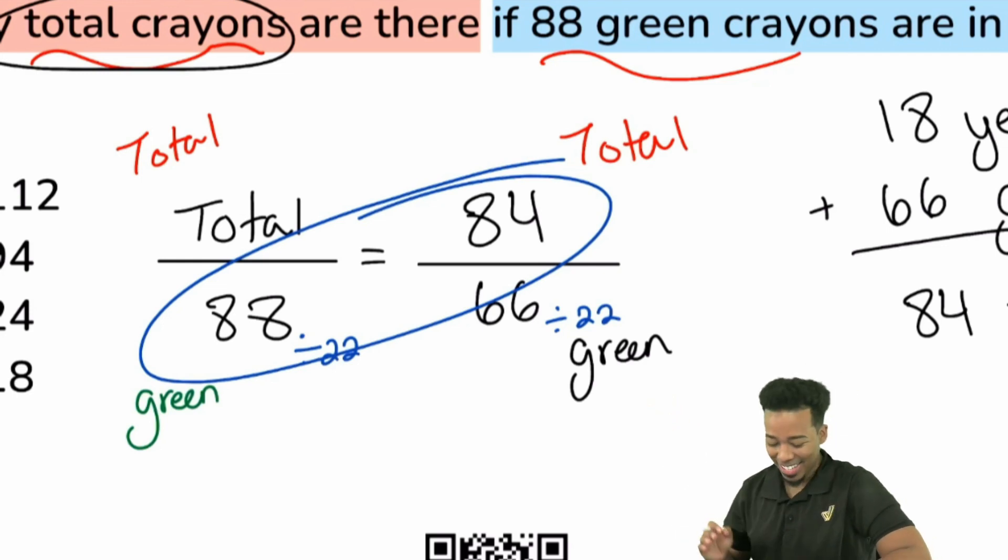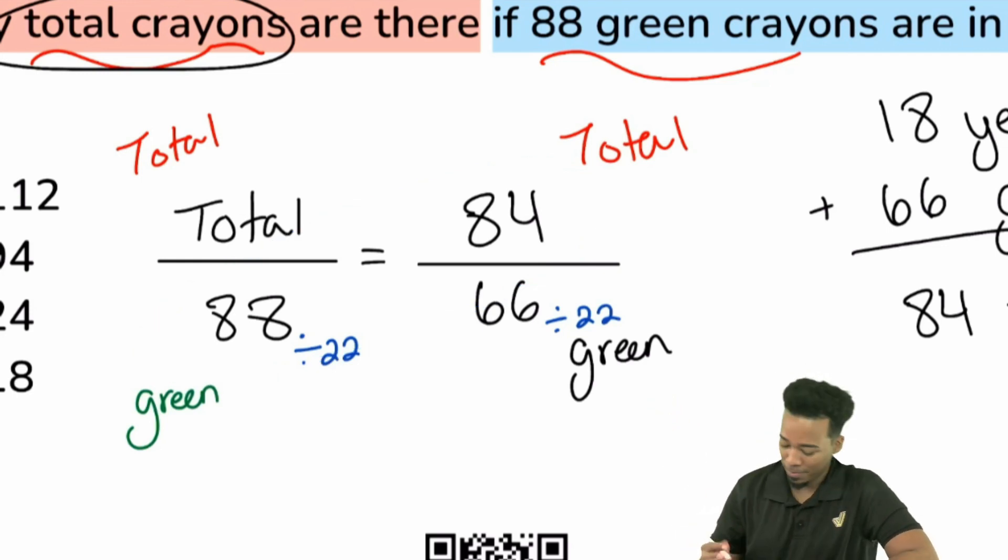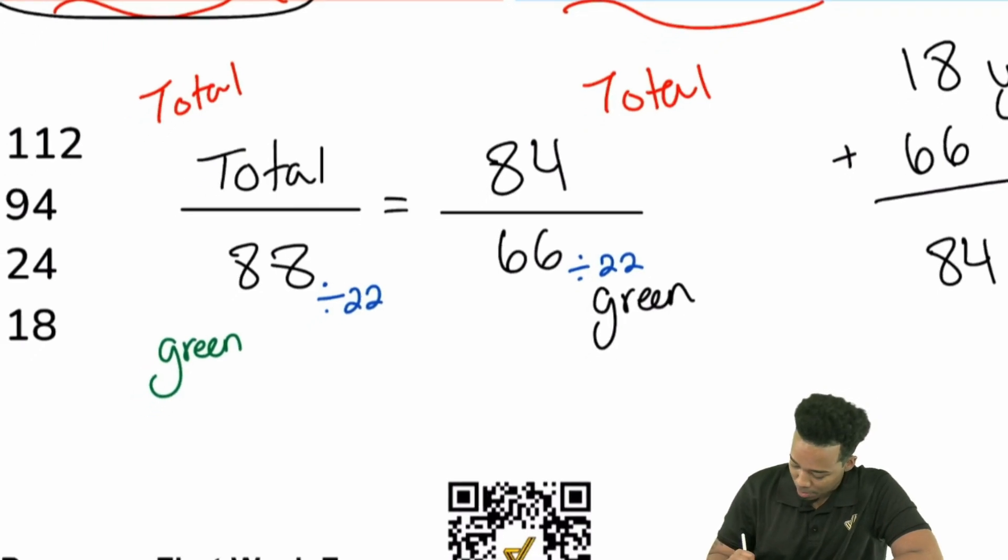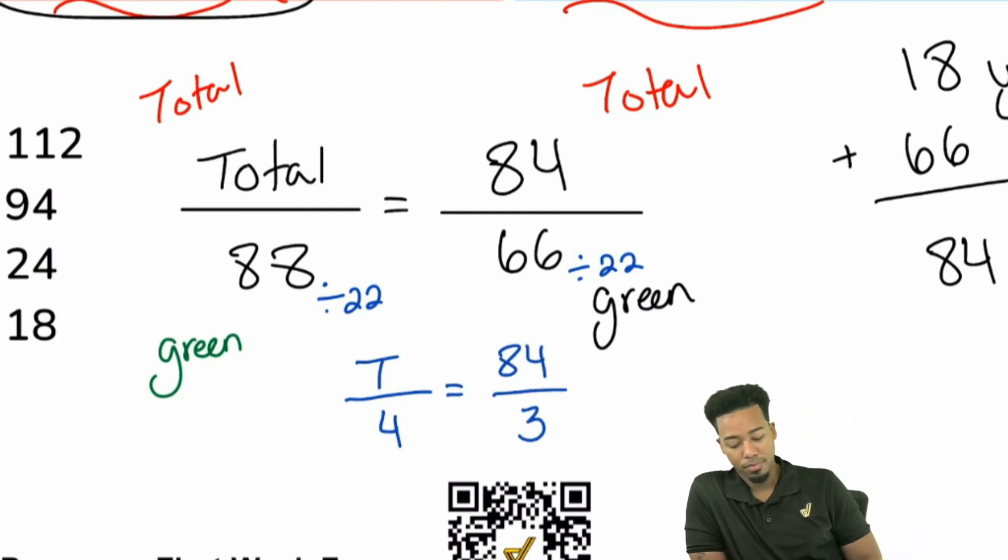So let's go ahead and simplify first. And so with that said, we'll end up having the total over 22 into 88 is 4. 84 and then 66 divided by 22 is 3. That's pretty good. That's pretty good so far.